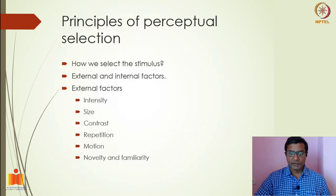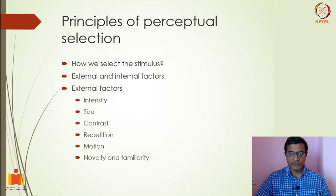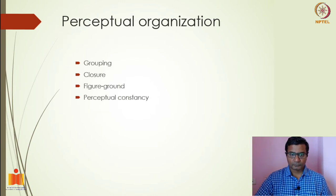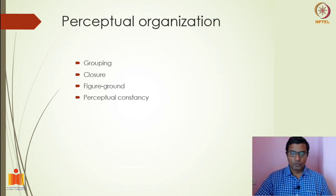Selecting a stimulus depends on two major factors — one internal, two external. We looked at what the internal factors and what the external factors are. The second step of perception is organizing the selected stimulus. We looked at some of the principles humans use to organize sensory stimulus.